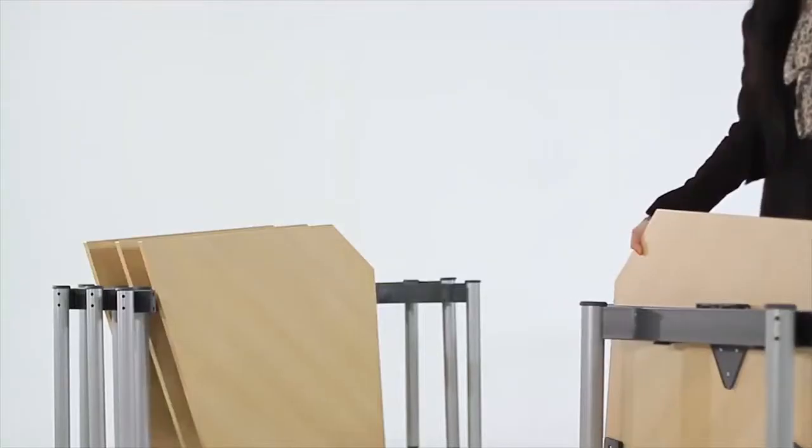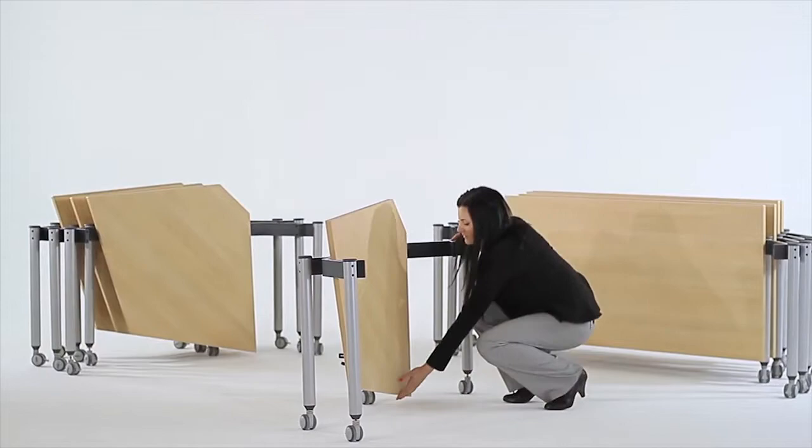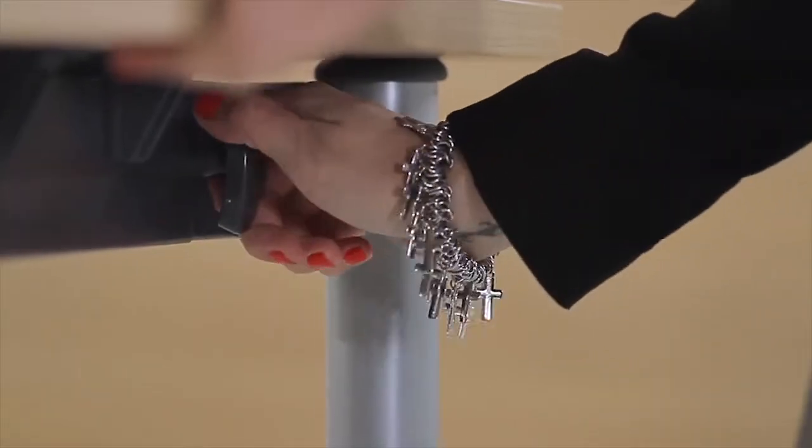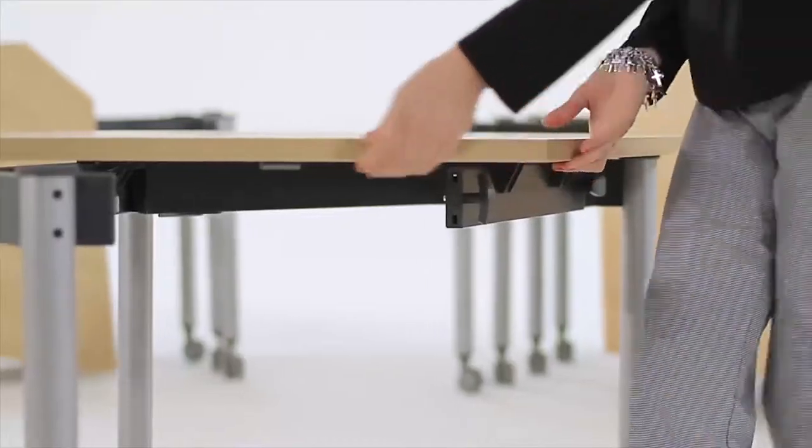Without any strenuous lifting, a Kite table is easily assembled or disassembled by one person. The only requirement is a simple short turn of each lock located on the front rail.